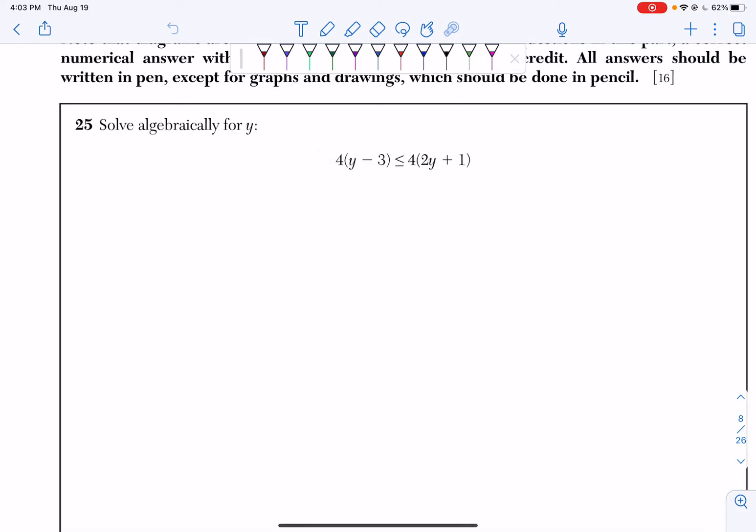So question 25 says solve algebraically for y, and we have this inequality right here. 4 times y minus 3 less than or equal to 4 times 2y plus 1.